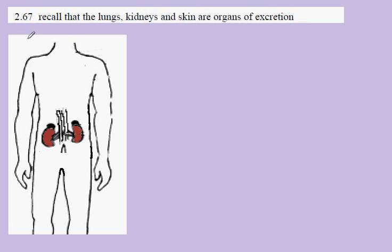IGCSE Biology, Syllabus Statement 267, specifically 267b. Here we're looking at the major organs of excretion in humans.